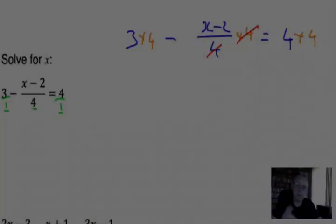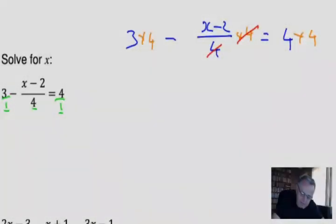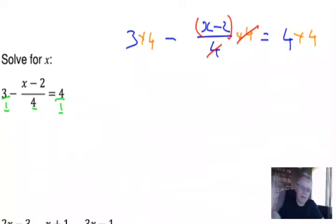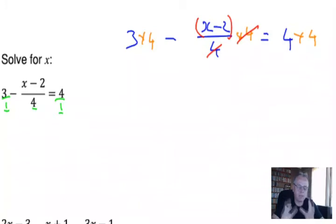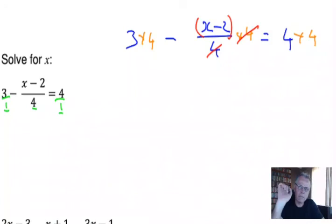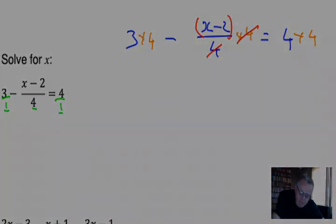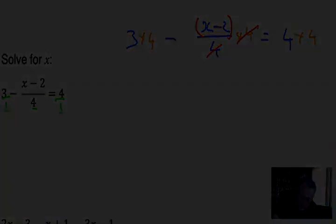Above or below the line, put brackets around them. Take my advice on this one: put brackets around every single numerator and denominator that you are working with that consists of more than one term before you carry on, because specifically in this case there's a minus in front, and that minus is going to influence that minus over there.